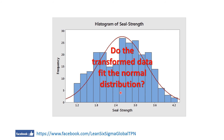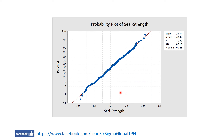A p-value of 0.845 in the Anderson-Darling test confirms that the data now follow a normal distribution. The Y^0.28 transformation makes the shield strength data appear normal, so we can use this normal data to calculate capability.